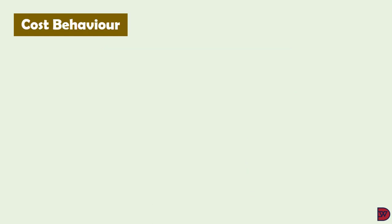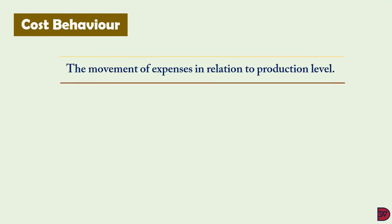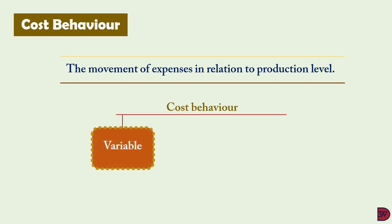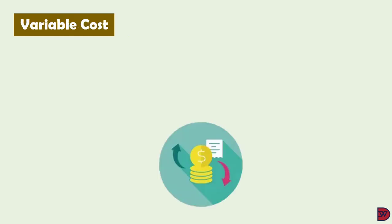Cost behavior is the movement of expenses or costs in relation to production levels of a product. Costs are normally expected to rise as production increases, but the manner of the change varies with different levels of production. The behavior of costs can be variable or fixed.